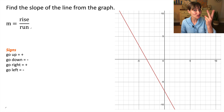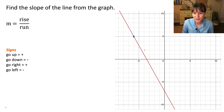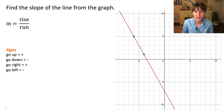Let's pick two points from the graph. For example, let's pick this point as our starting point, and let's pick this point as our ending point, and let's travel from one point to the other.